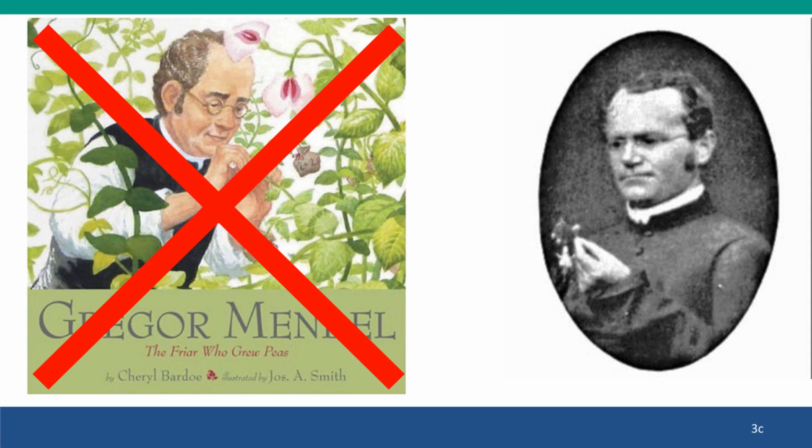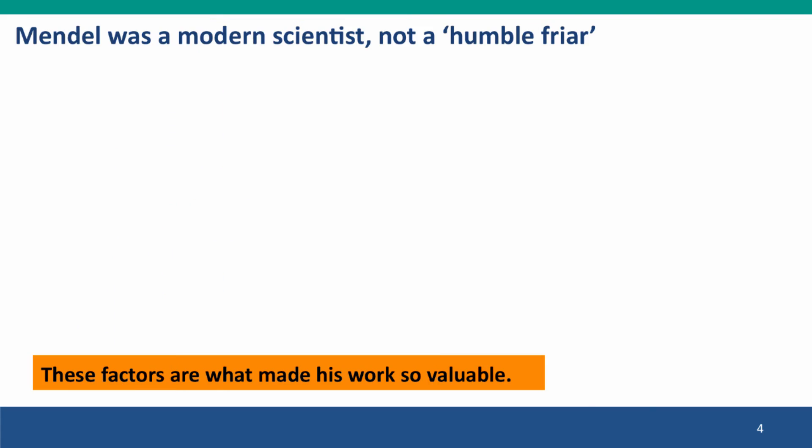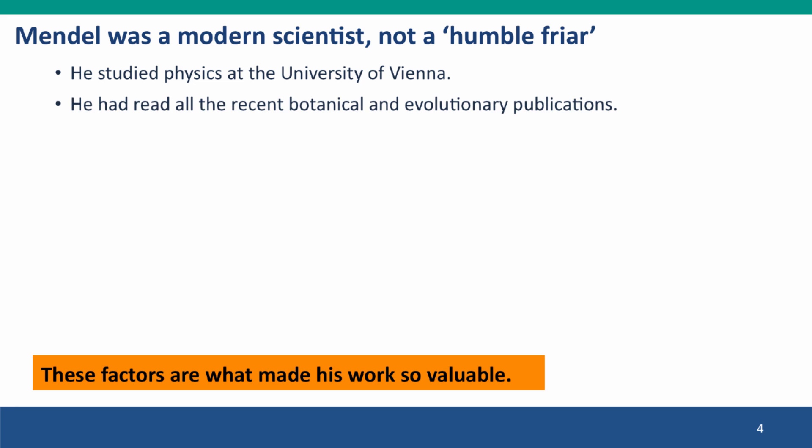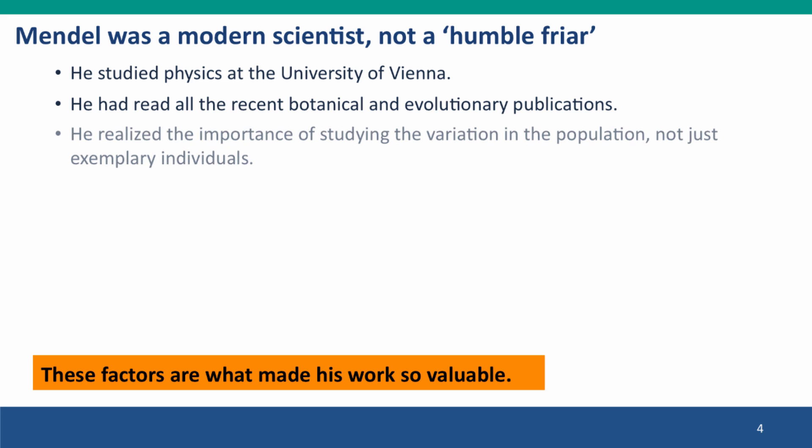he was a serious and very well-trained scientist. He studied at the University of Vienna. He studied physics, and he'd read all the latest papers — botanical papers, evolutionary papers. He'd read Darwin. He knew that it was important to study the variation in the population, not just to pick out particular individuals and study them. This was really a revolutionary approach. Nobody was paying attention to population-level variation.